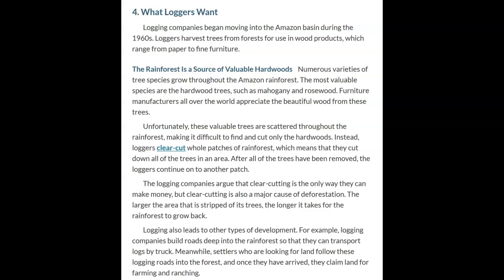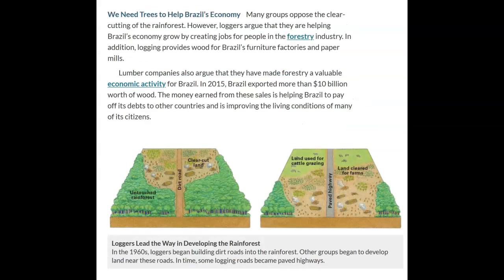The larger the area stripped of trees, the longer it takes for the rainforest to grow back. Logging also leads to other development: companies build roads deep into the rainforest to transport logs by truck, and settlers follow these roads to claim land for farming and ranching. However, loggers argue they are helping Brazil's economy by creating jobs and providing wood for furniture factories and paper mills. In 2015, Brazil exported more than $10 billion worth of wood, helping pay its debts and improving living conditions for many citizens.